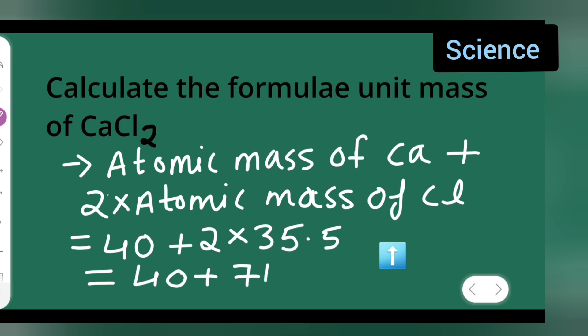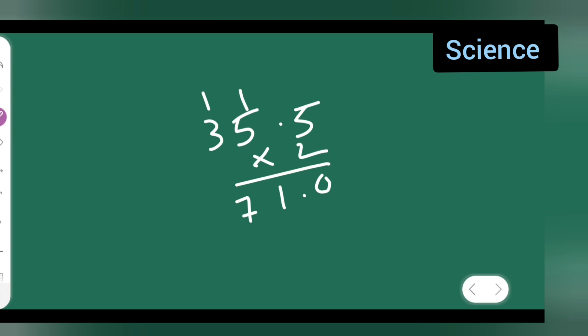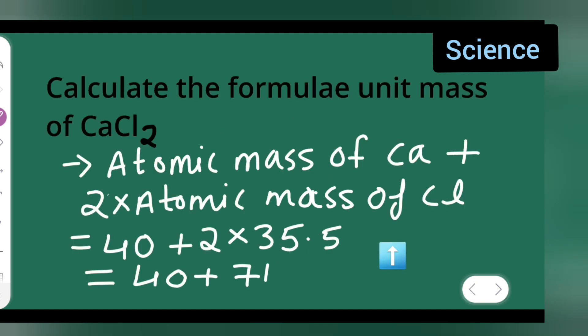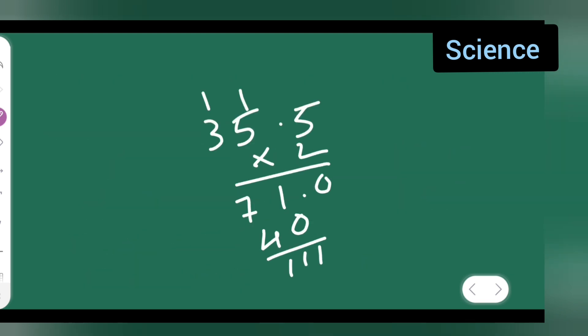So I can write down here directly. What is the answer? 111. So write down 111 u. So I hope you have understood how to calculate the formula unit mass of CaCl2.